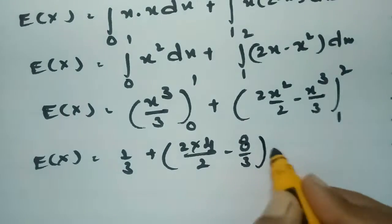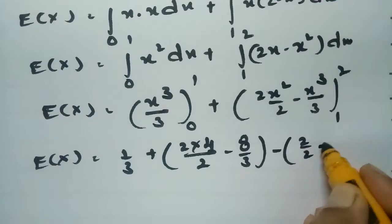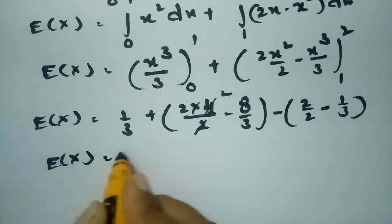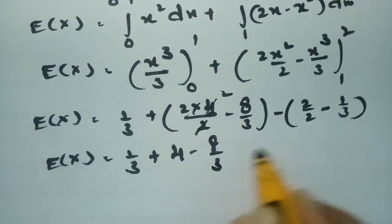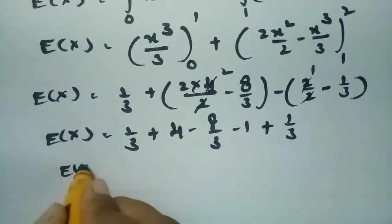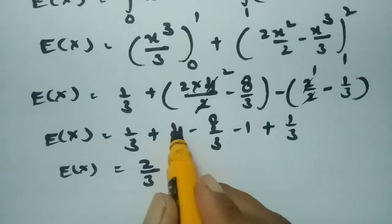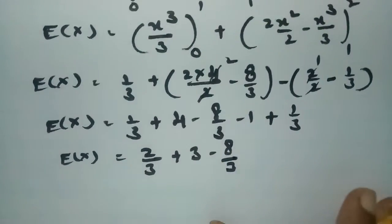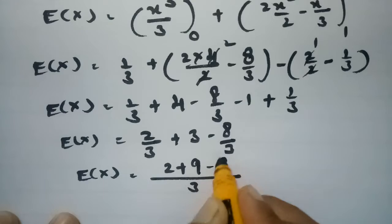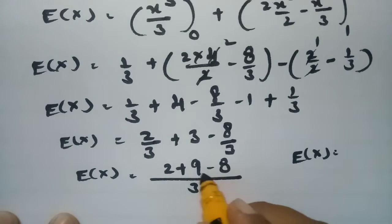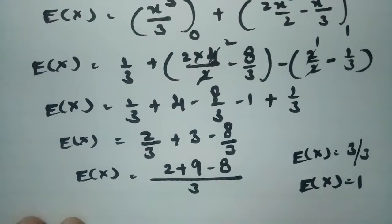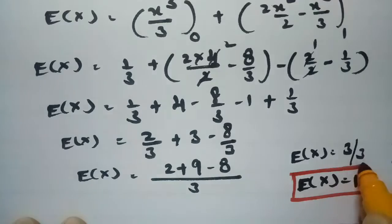Substituting the limits: the first term gives 1/3. For the second integral, substituting the upper limit 2 gives 2 times 4 over 2 minus 8 over 3, and substituting the lower limit 1 gives 2 over 2 minus 1 over 3. Combining, E(x) equals 1/3 plus 4 minus 8/3 minus 1 plus 1/3. Taking 3 as LCM gives (2 plus 9 minus 8) over 3 equals 3 over 3, so E(x) equals 1.